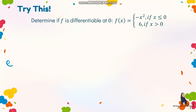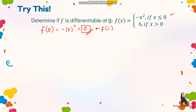Now let's determine if a piecewise function is differentiable at 0. We have f of x equals negative x squared if x is less than or equal to 0, and 6 if x is greater than 0. First, solve for f of c: f of 0 uses the first sub-function, giving negative 0 squared, which equals 0. So f of c equals 0.